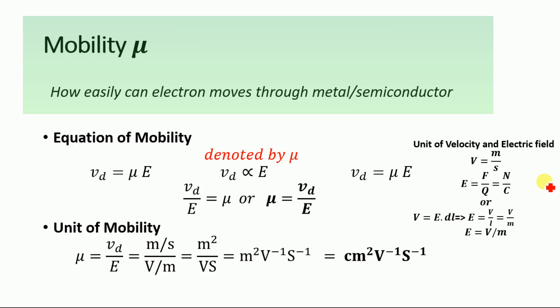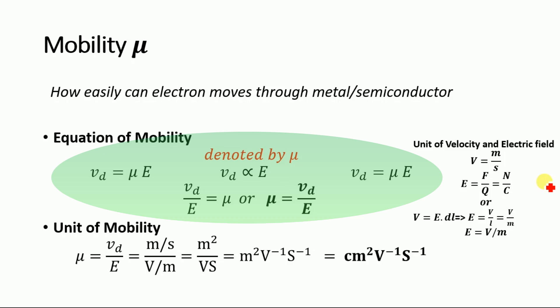Mobility in physics means how easily electrons or holes can move through a metal or semiconductor. The equation of mobility can be derived from the drift velocity equation. Mobility is denoted by mu. We know that the drift velocity equation is: drift velocity equals mu times electric field. The drift velocity is directly proportional to the electric field, where mu is a constant known as mobility.